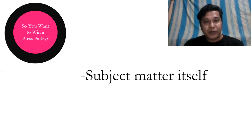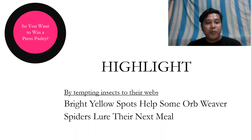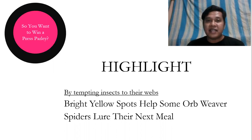Let's look at the given illustrative examples. For highlight, we have the main headline: 'Bright yellow spots help some orb weaver spiders lure their next meal.' And the highlight is that these orb weaver spiders tempt insects to their webs, so the highlight is placed in the kicker.